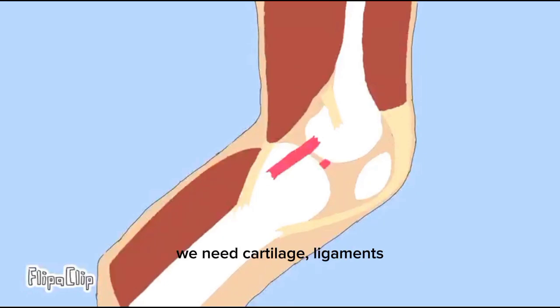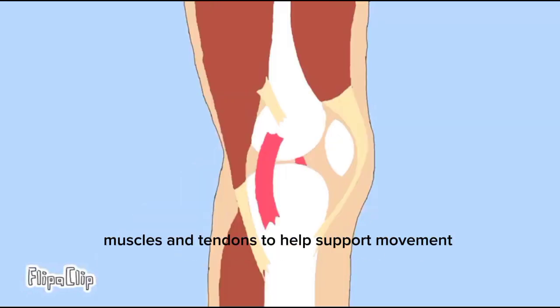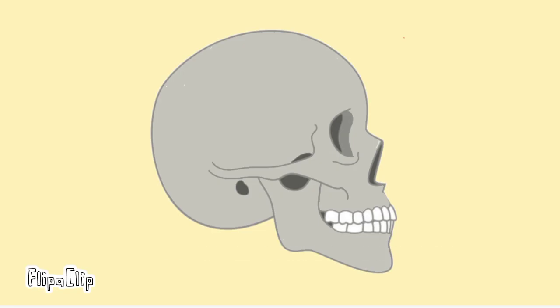Bones can't move by themselves. We need cartilage, ligaments, muscles and tendons to help support movement. We have different types of joints.